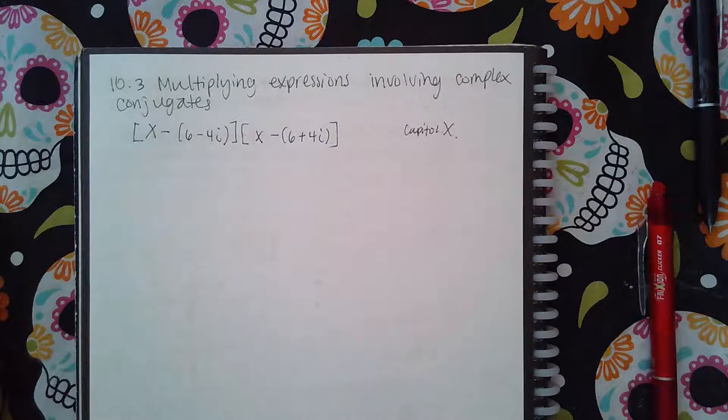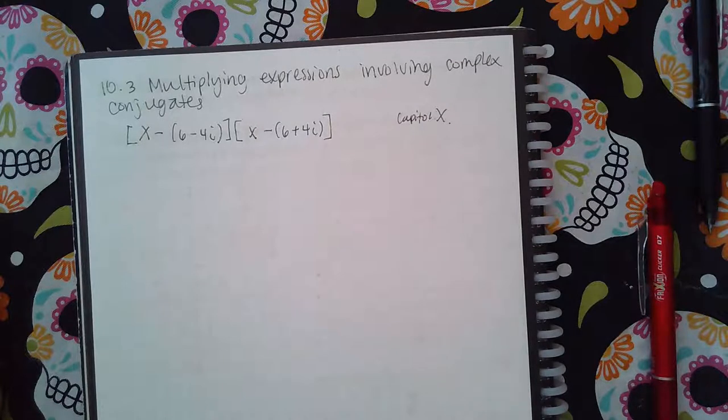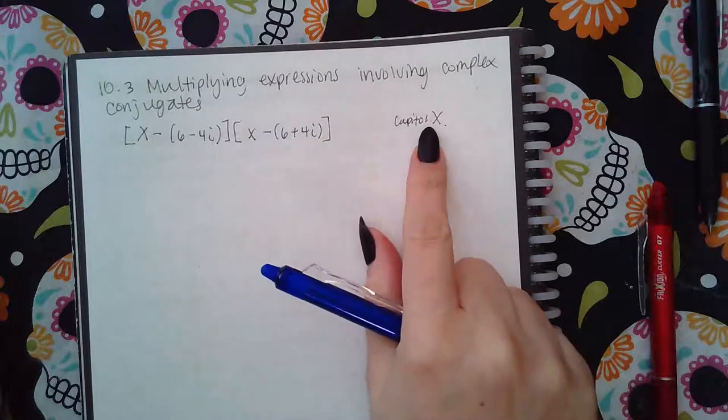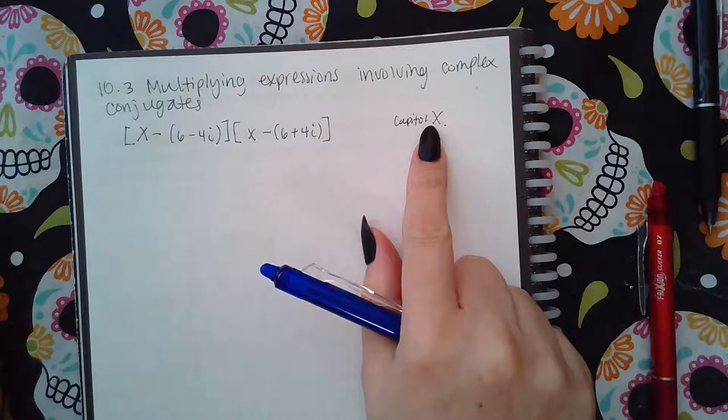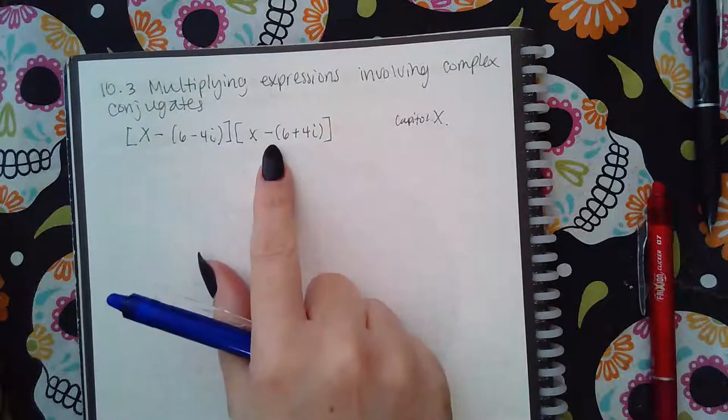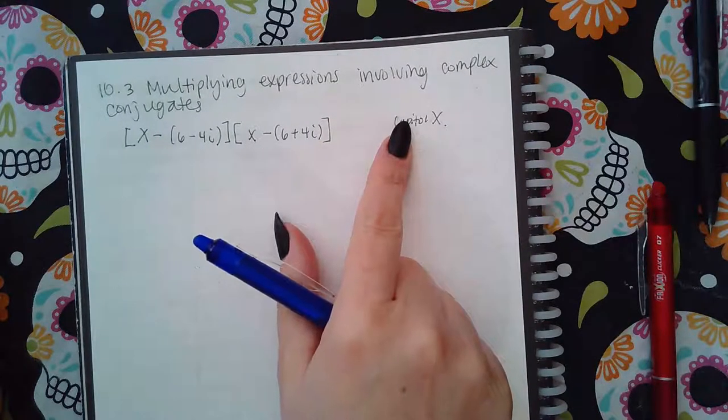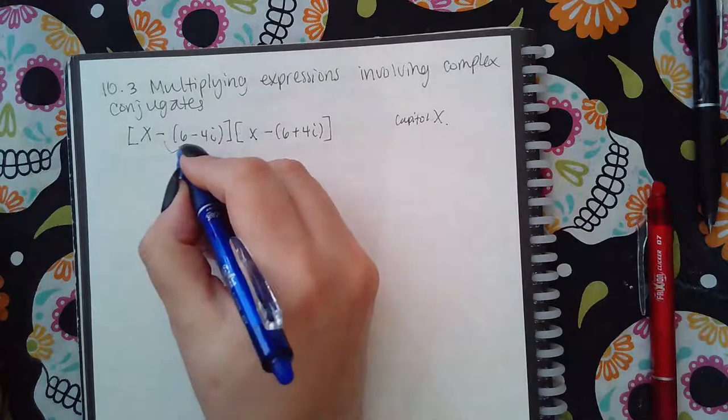So here we have 10.3 multiplying expressions involving complex conjugates. First of all, I noticed that it had a capital X, so if you try to type in little x it's gonna tell you the answer is wrong. Make sure that if it's using capital X's, when you type in your answer you also use capital X's.